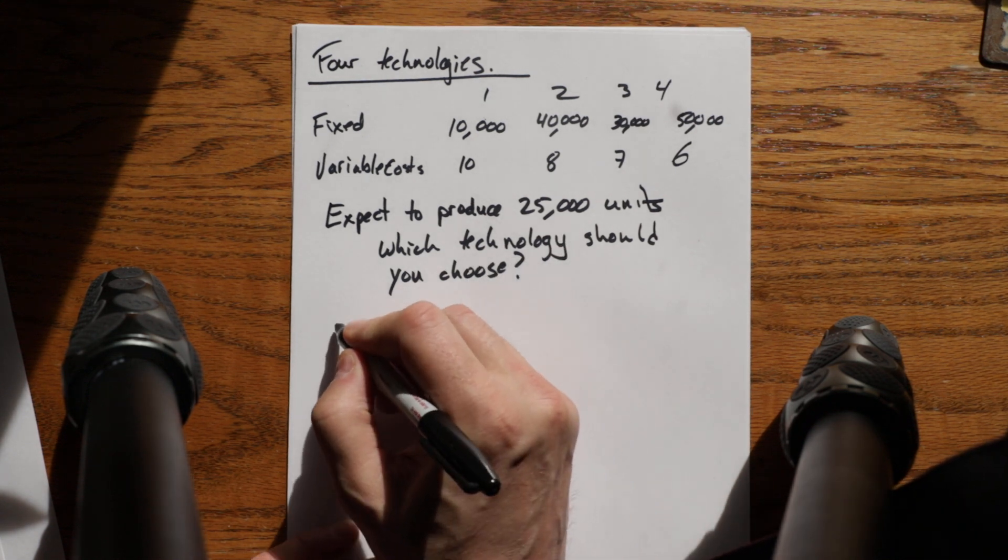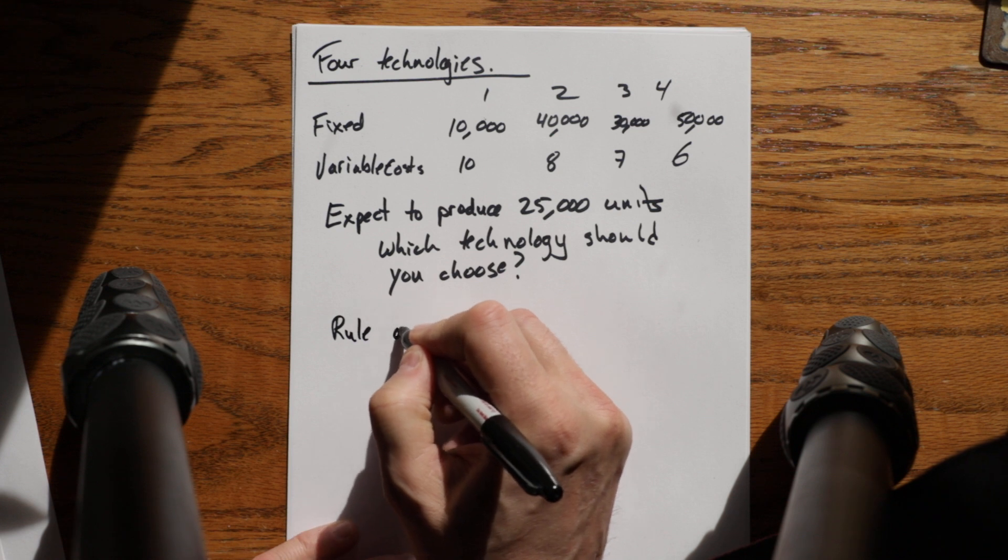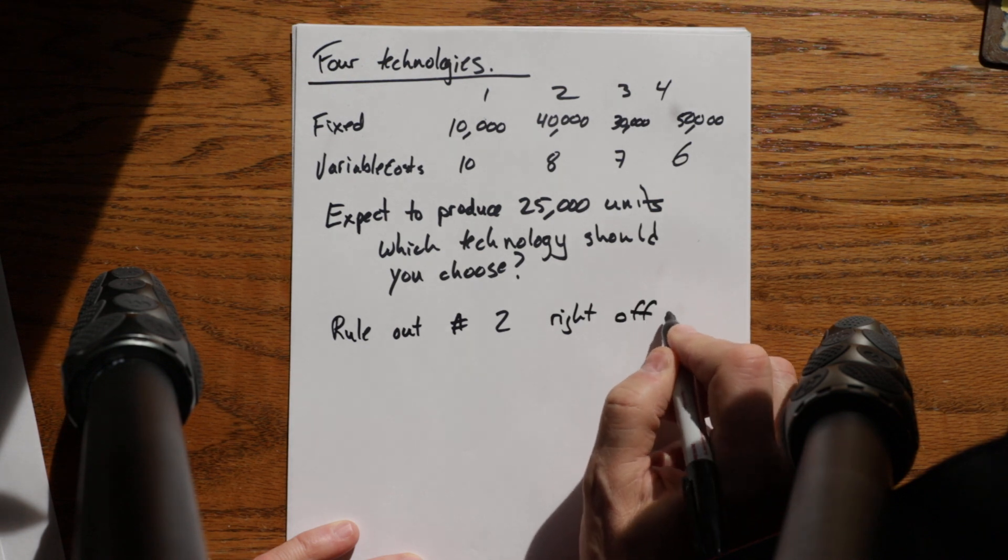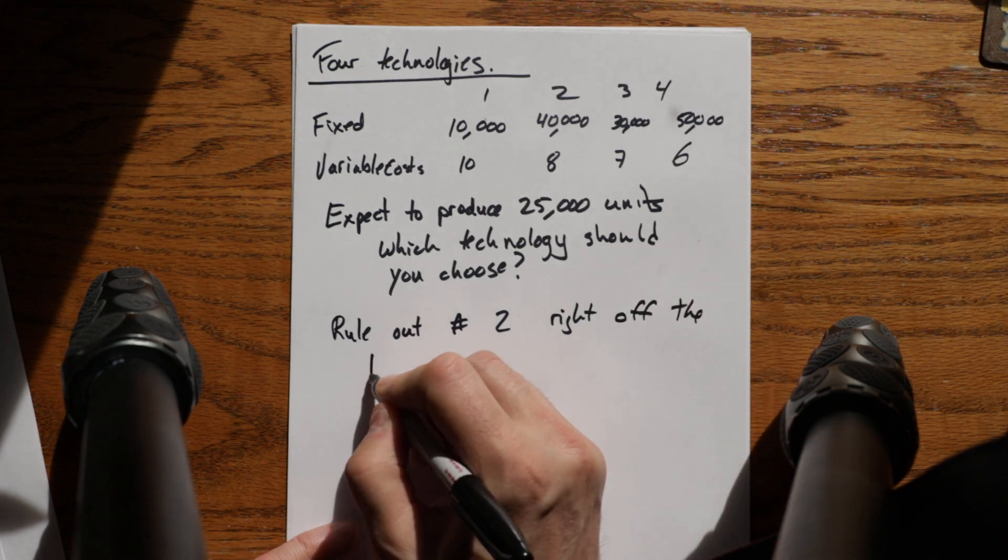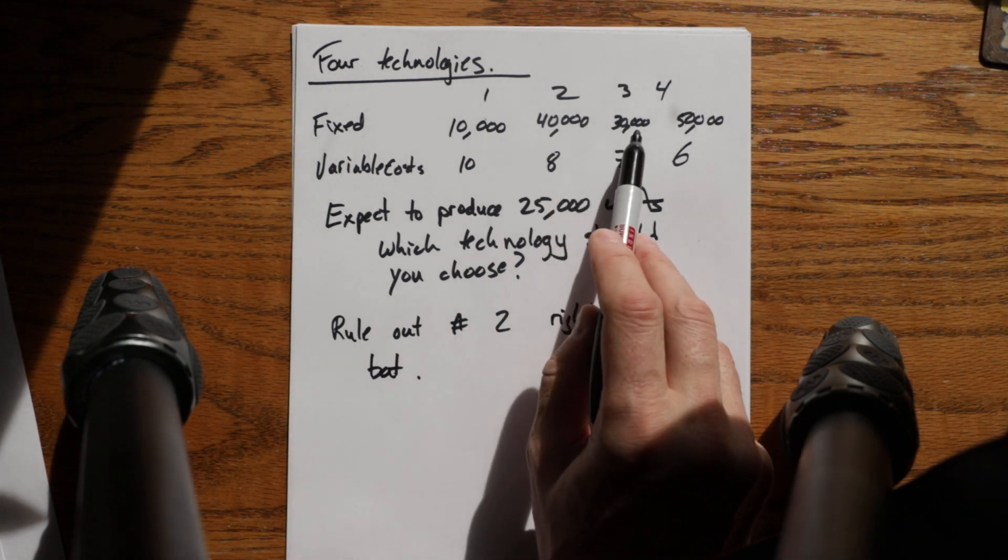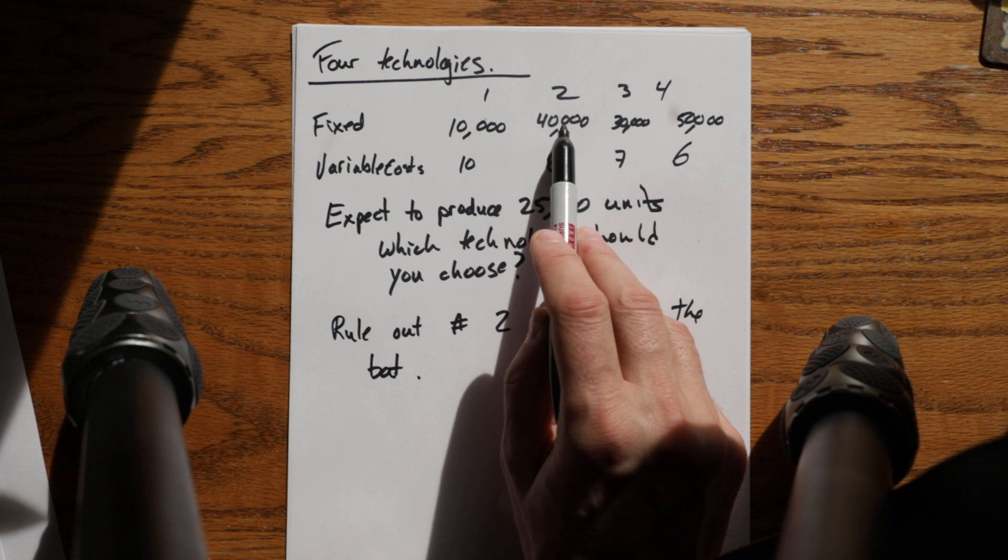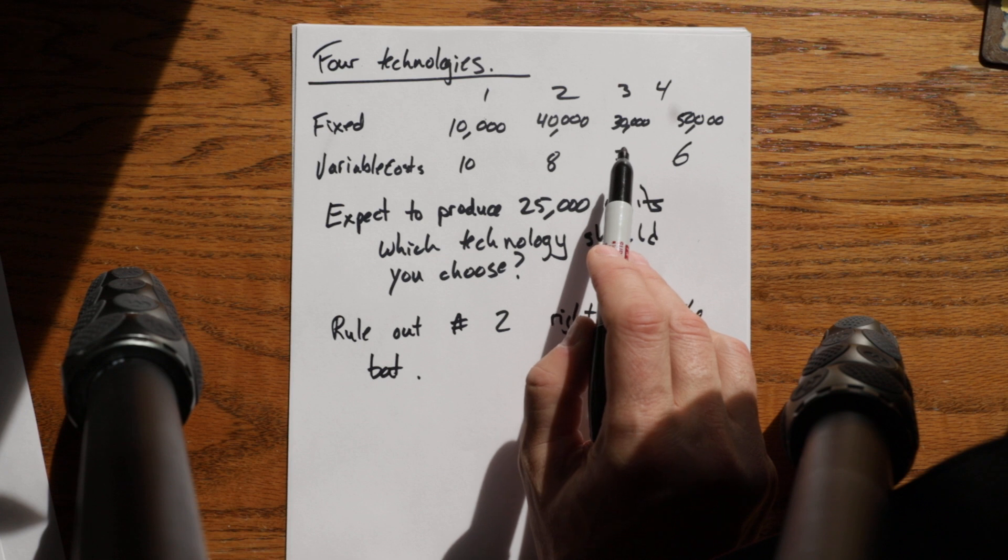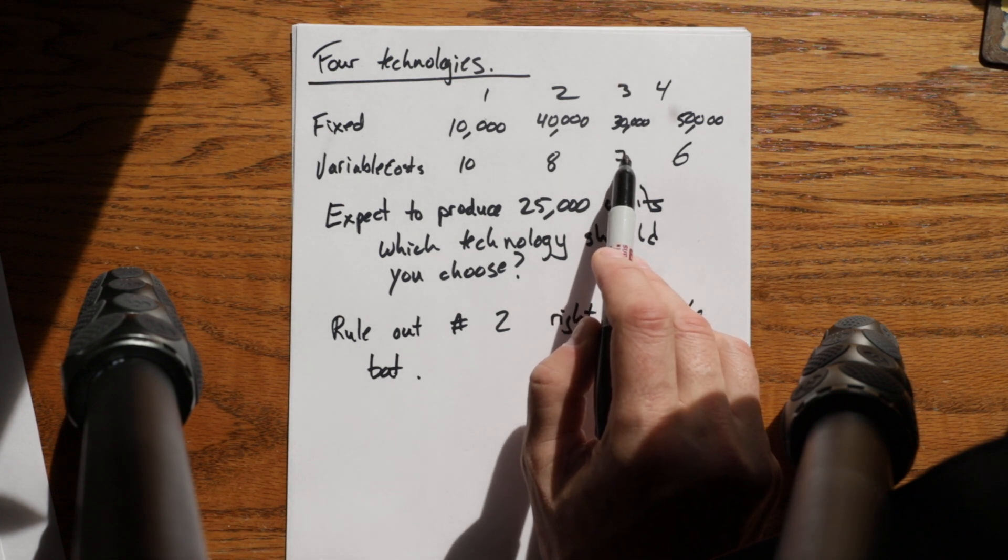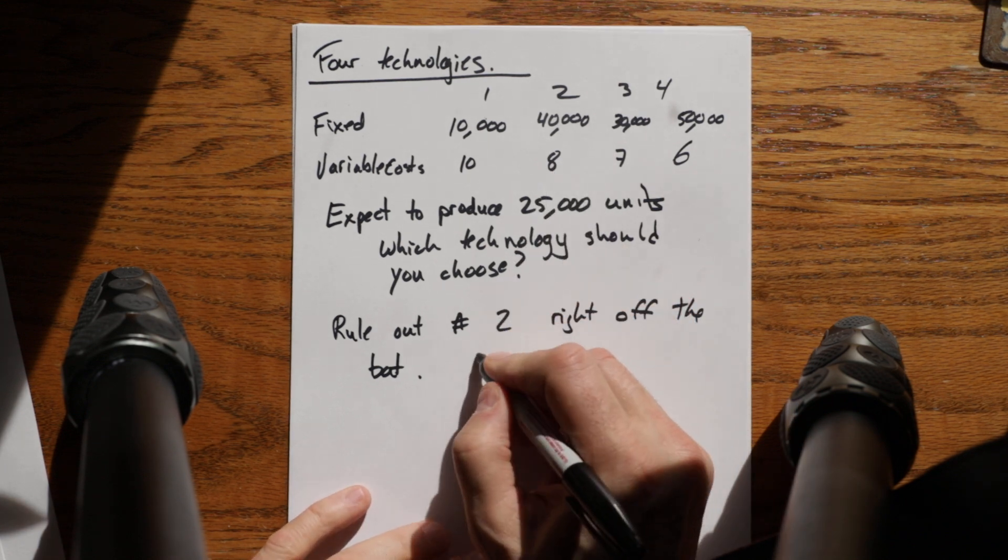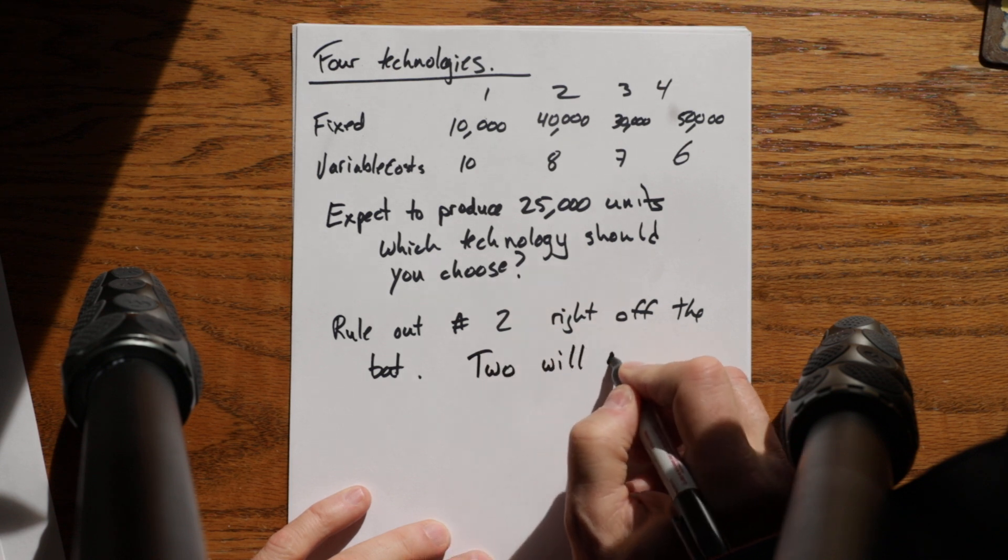In this circumstance I'm going to rule out number two right off the bat, and that's because if I compare two to three, fixed cost is $30,000 for three, $40,000 for two. Variable cost is $7 per unit for three and $8 per unit for two. In this circumstance two will never be cheaper than three.